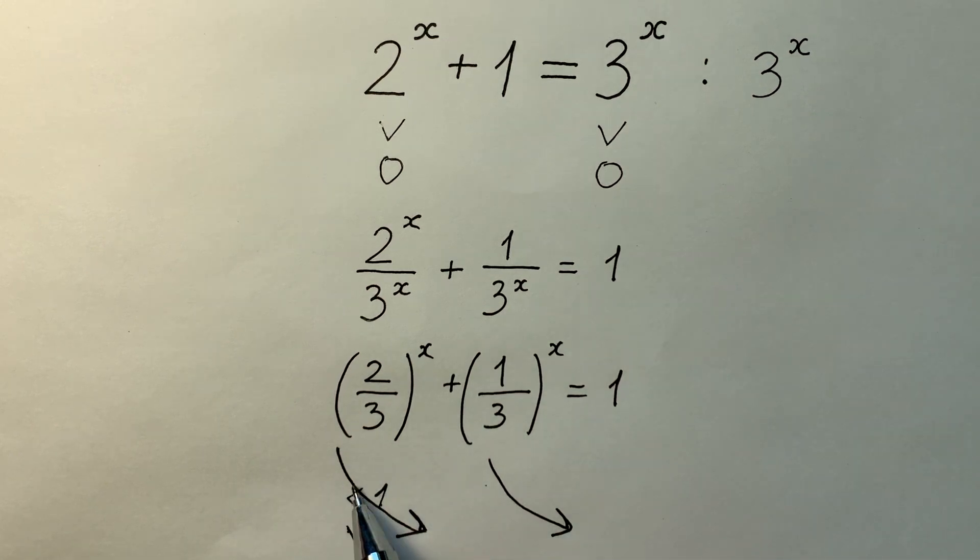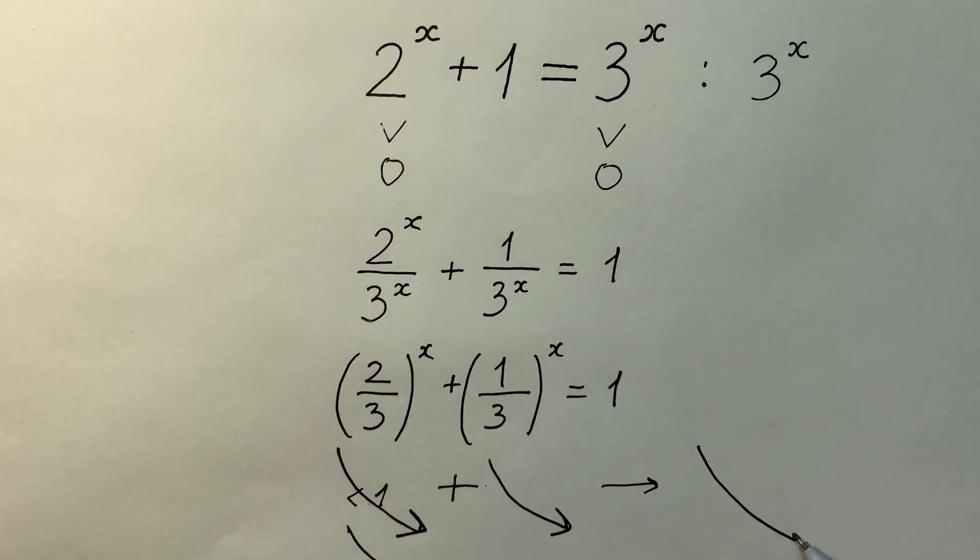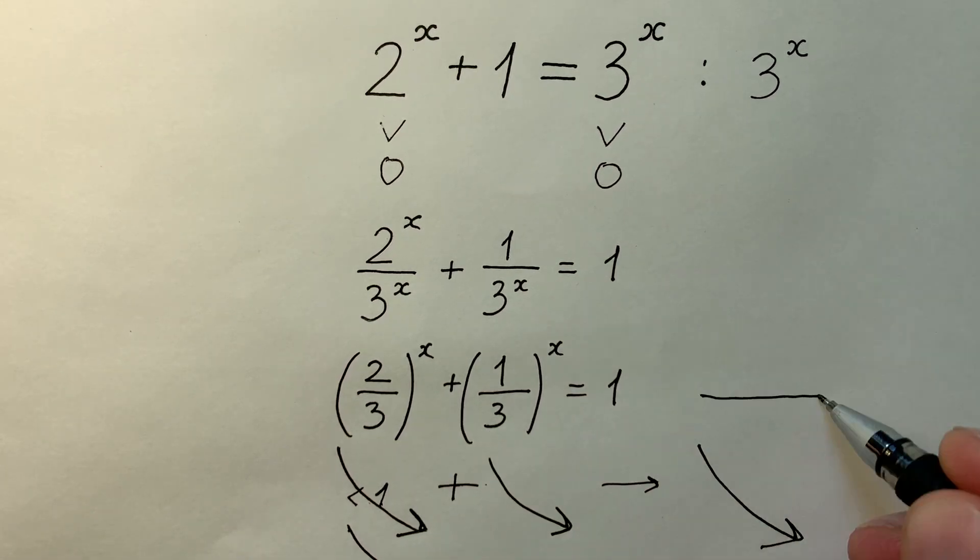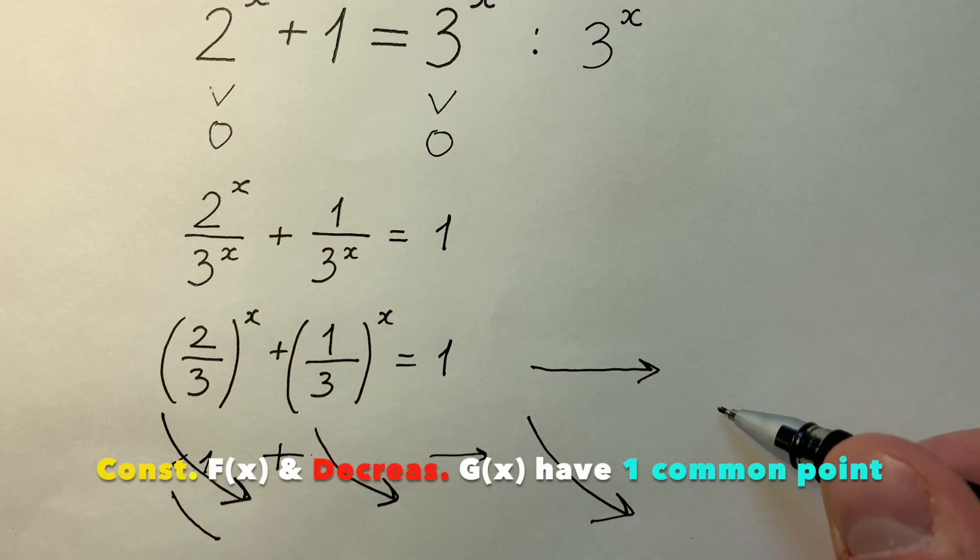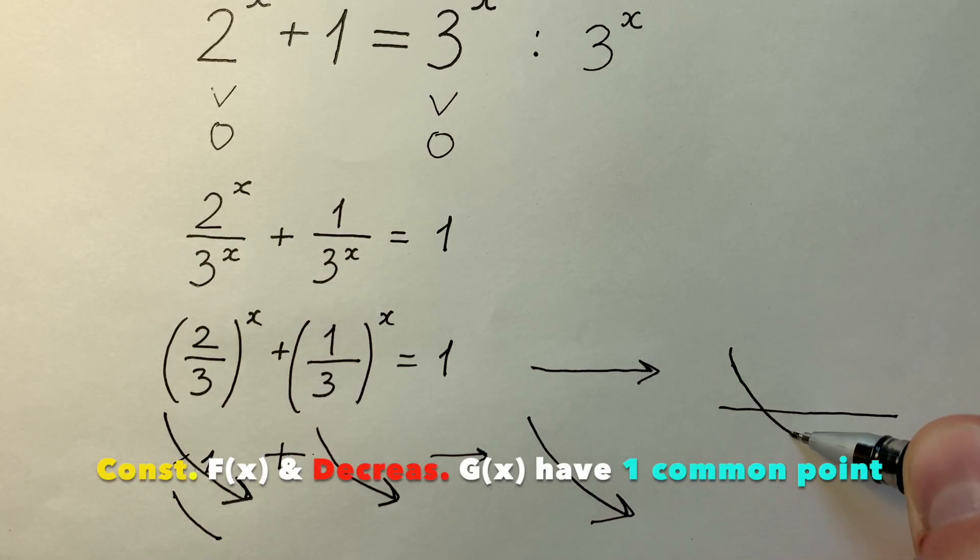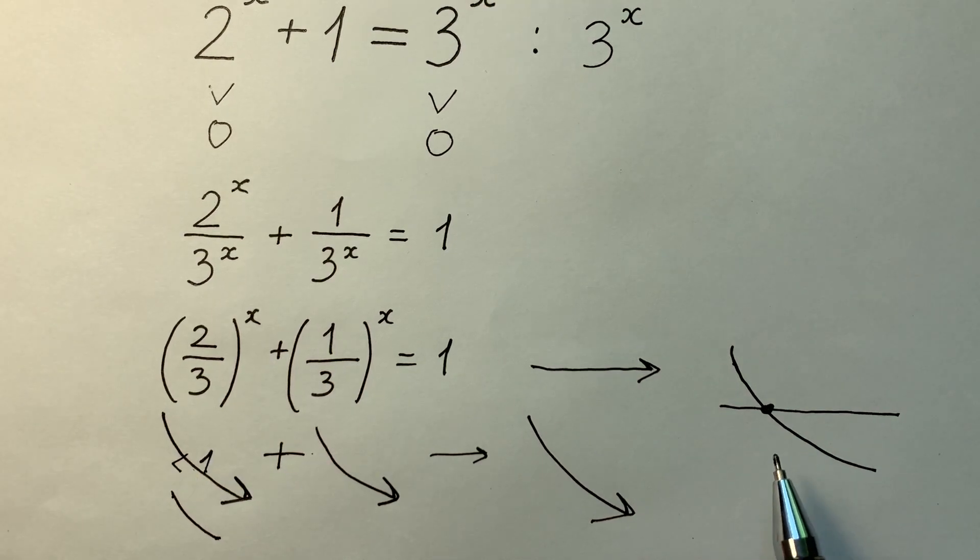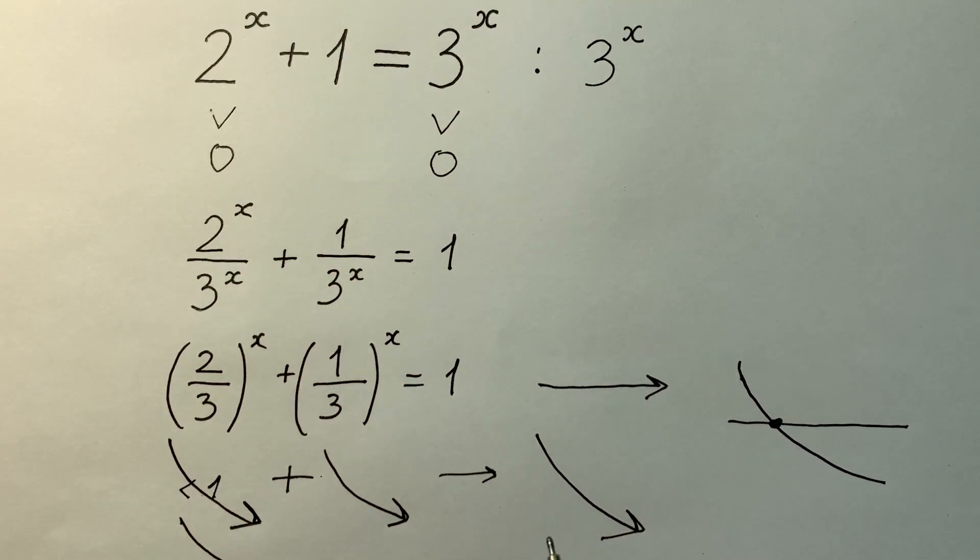Now we have that sum of decreasing function 1 plus decreasing function 2 gives us a decreasing function. It's on the left side, but on the right side we have a constant. And we know the rule that a constant and decreasing function can have only one solution. We don't know what that is, but it's only one. So let's try to guess this solution.